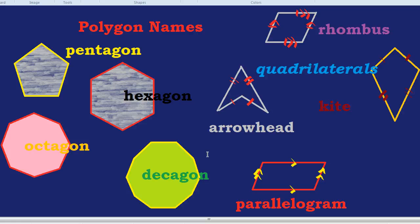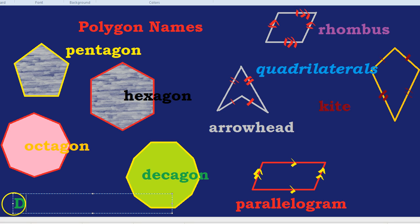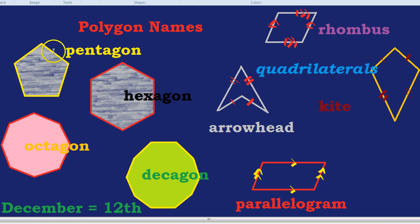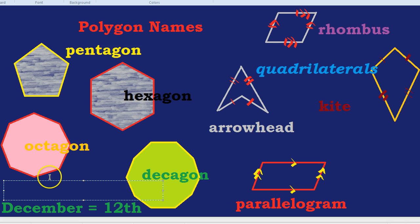But hang on a second. There's something weird going on here. What about months? December is the twelfth month. December equals the twelfth month. Yet, you're talking here about ten sides. October is the tenth month. October equals the tenth month. But you're talking about octagon having eight sides.